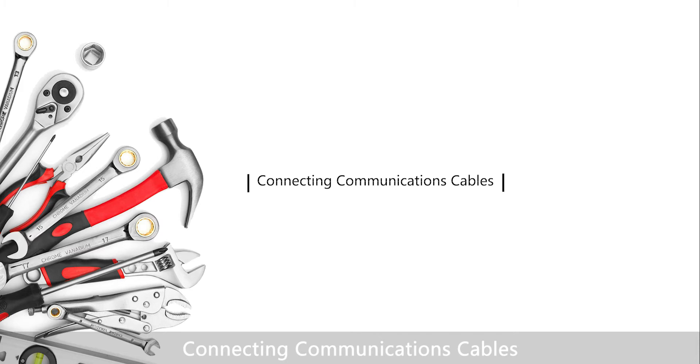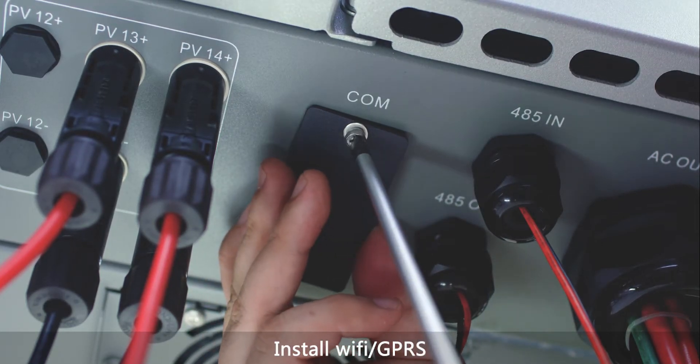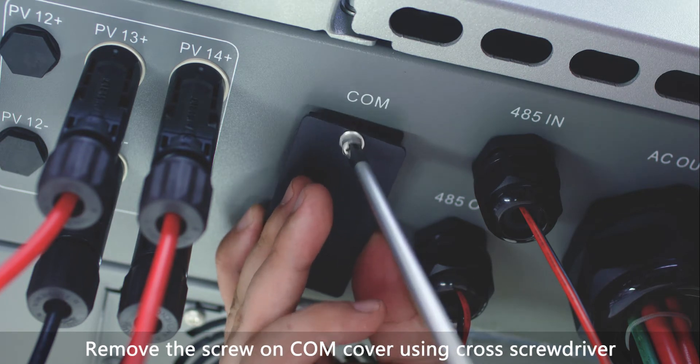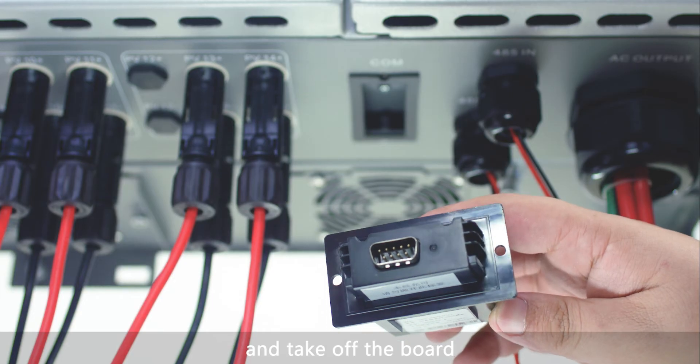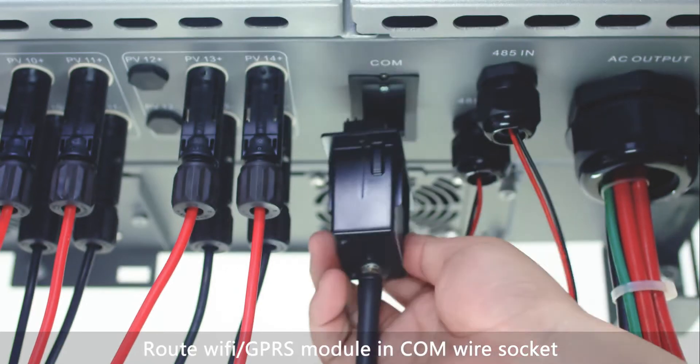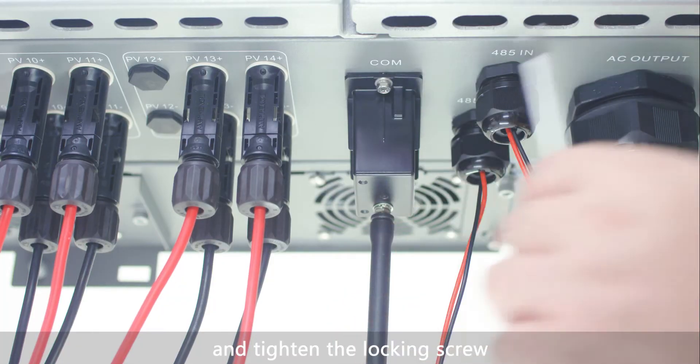Connecting communications cables. Install Wi-Fi GPRS. Remove the screw on COM covering using cross screwdriver and take off the board. Route Wi-Fi GPRS module in COM wire socket and tighten the locking screw.